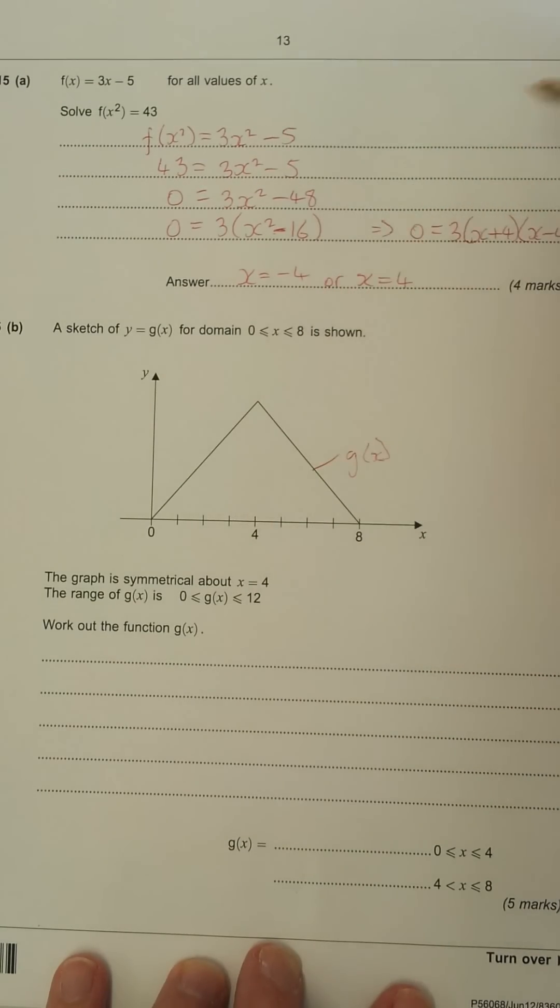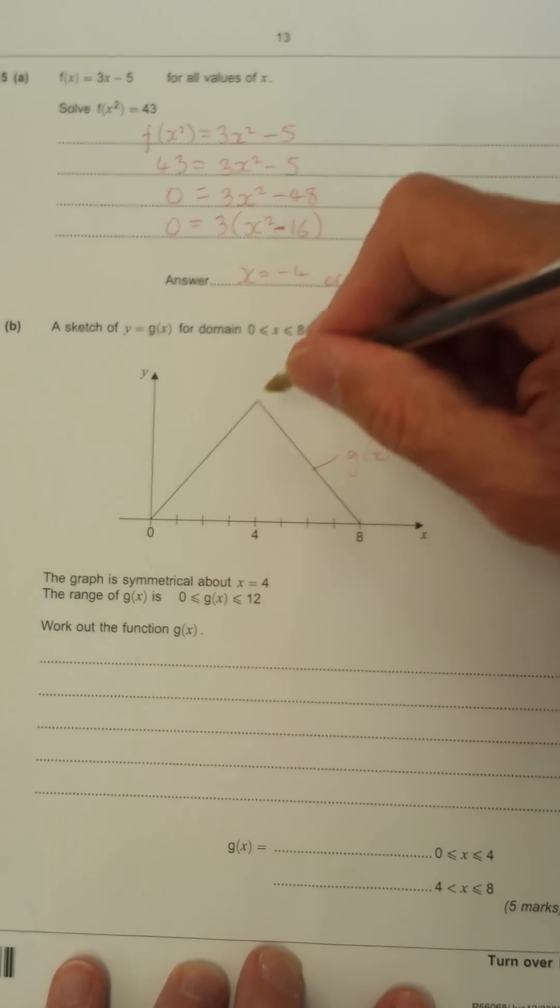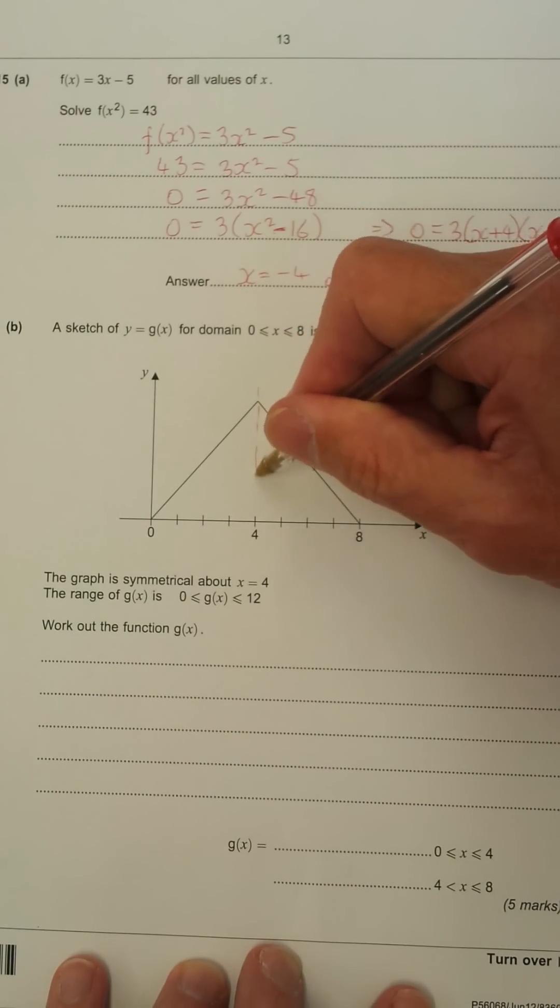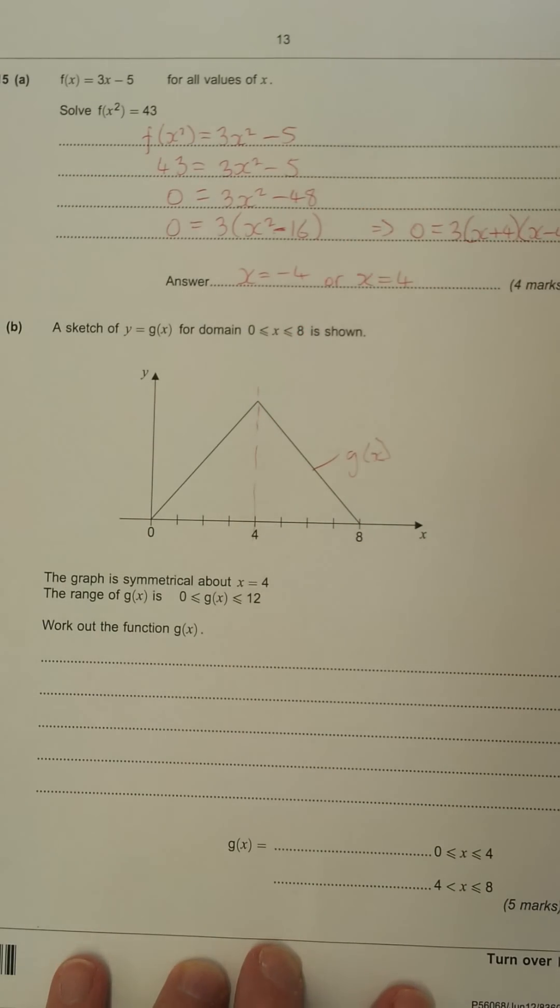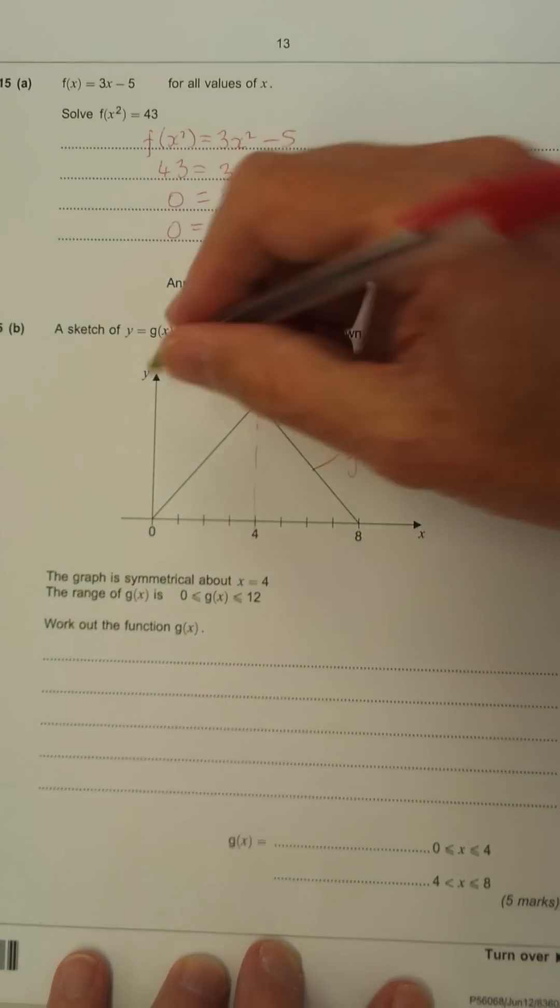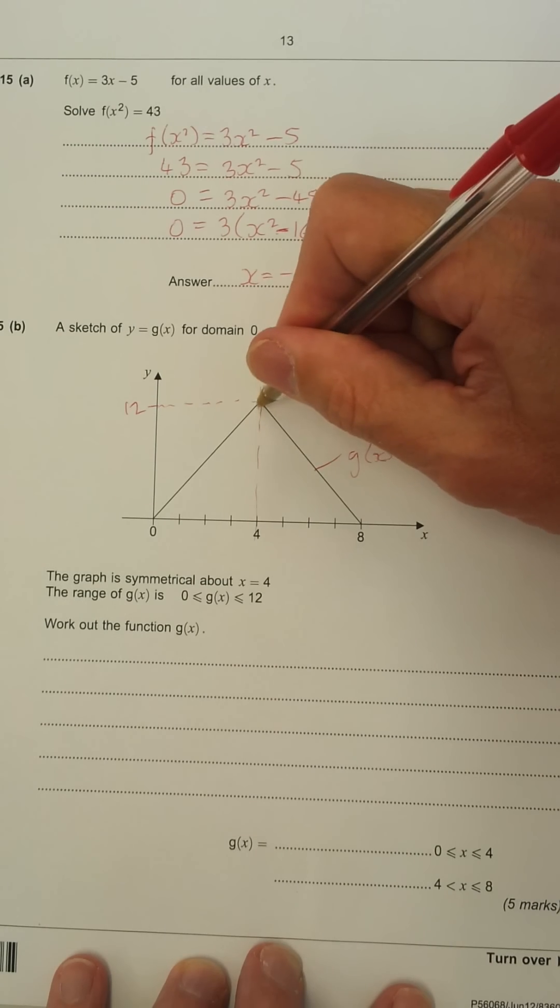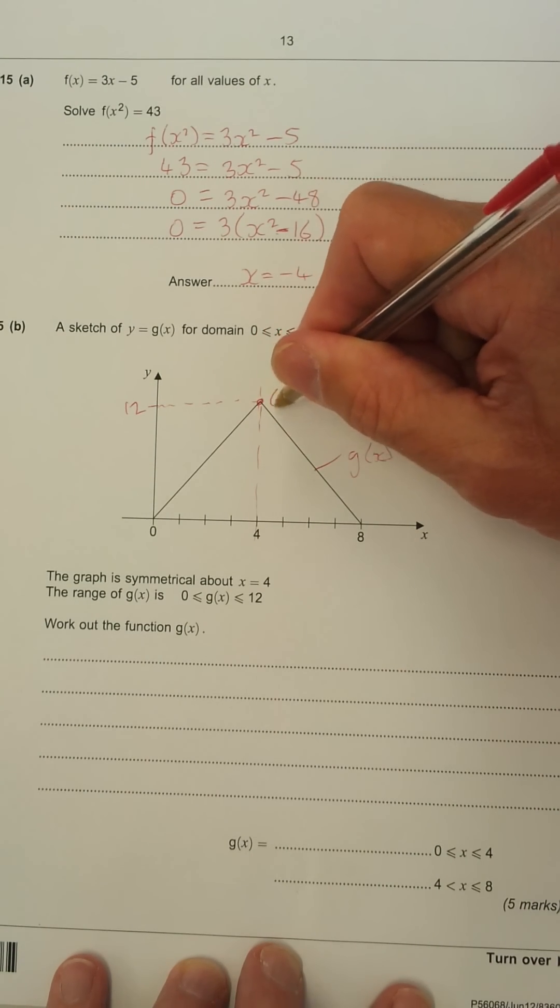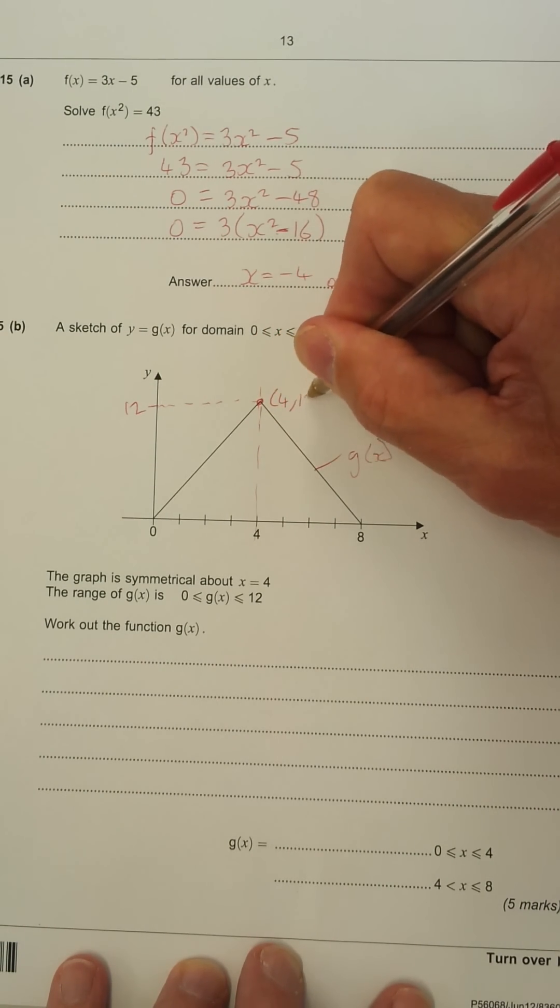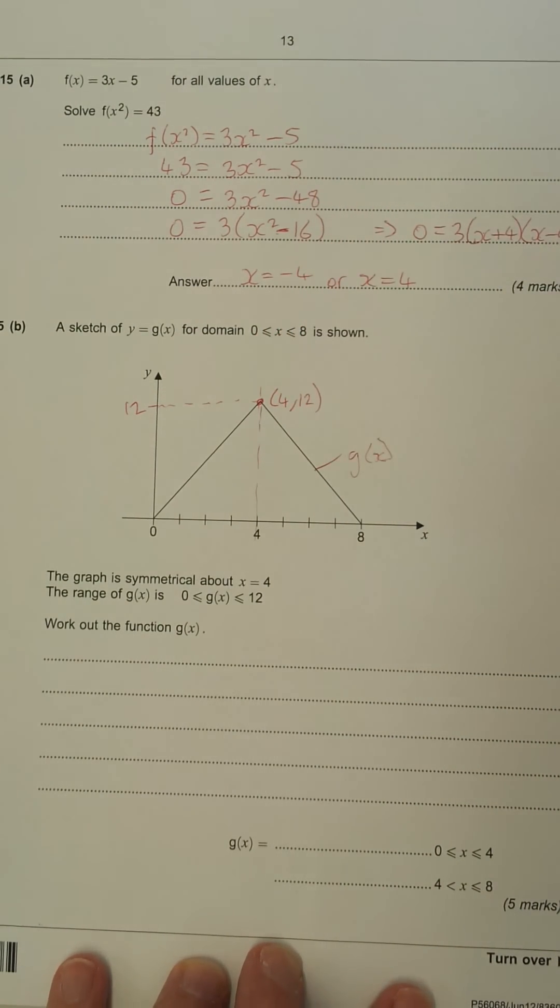So we need two separate parts to the answer. It says it's symmetrical about x equals 4. So I've got that. And the range is 12. So that means the range goes up to 12. So we know that the coordinates of this point is 4, 12. And that's what we need to use for most of this question.